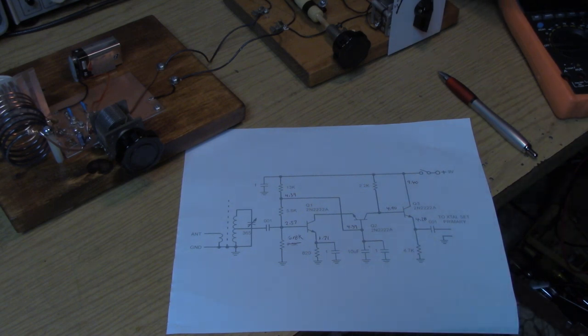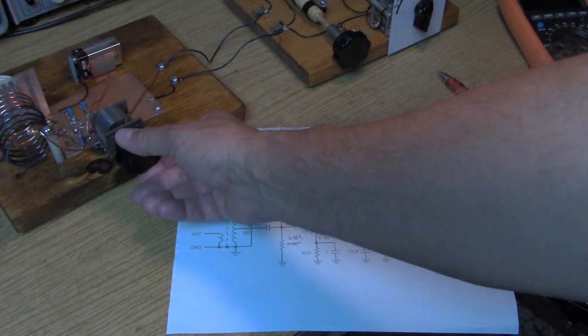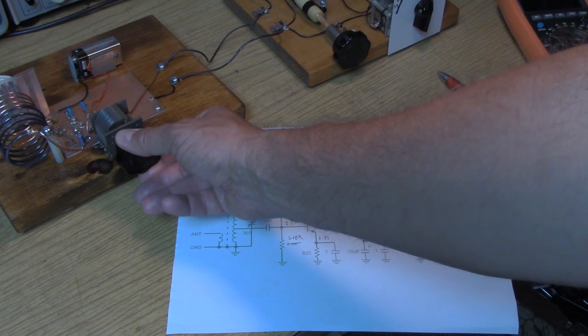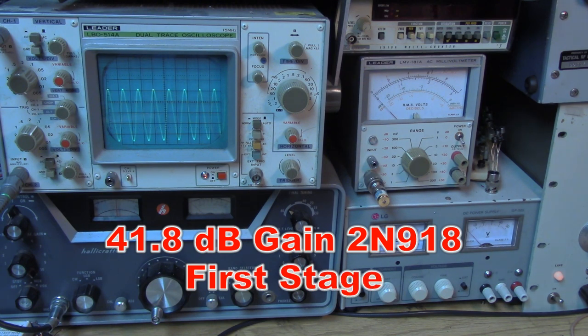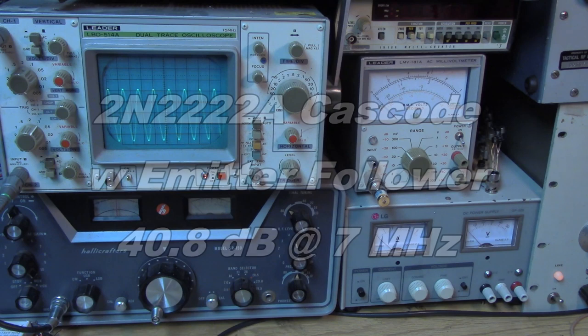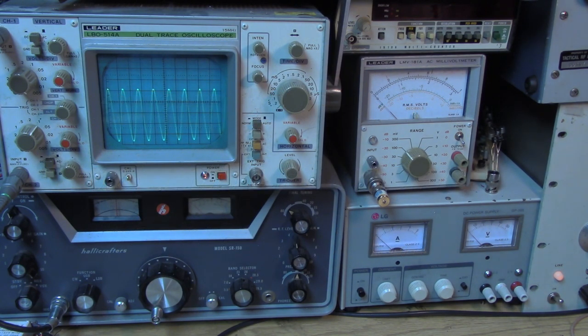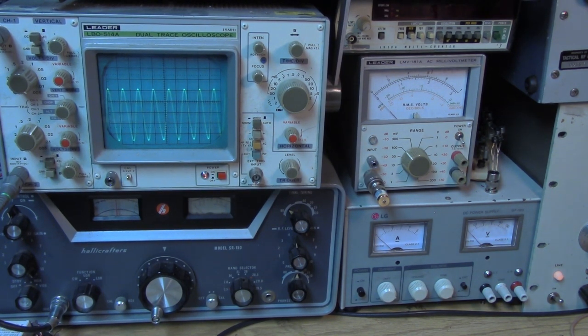I might want to go down a couple turns which is closer to the ground side on the coil. But it certainly is working. It went down to 550 millivolts so that's 41.8 dB for the 2N918. So we got 1 dB of gain out of the VHF transistor compared to the 2N2222 at 7 MHz.